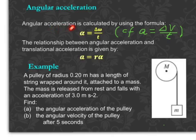Angular acceleration is calculated by using this formula. Alpha is the angular acceleration equal to delta omega, changing angular velocity, divided by time. Compared with this familiar formula that you all know, acceleration equal to changing velocity over time. This is translational motion. That is rotational motion.